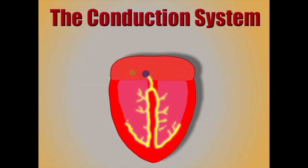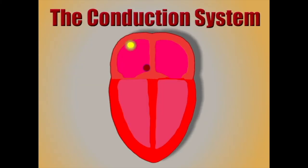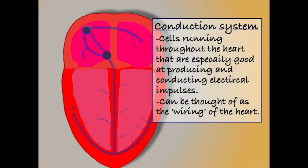The cardiac cycle is controlled and regulated by the heart's electrical conduction system. It is made up of specialist cells that run throughout the heart, transmitting the electrical impulses that trigger the cardiac muscle to contract.